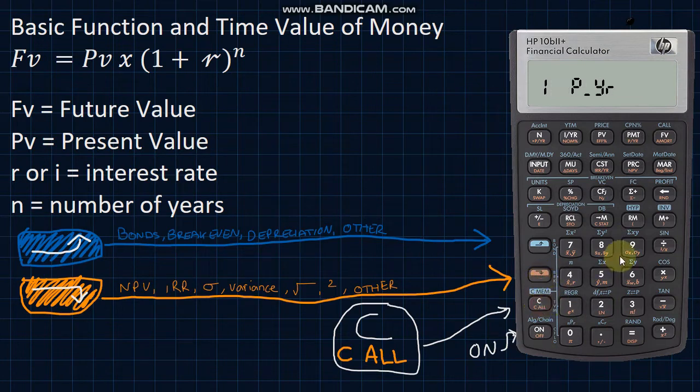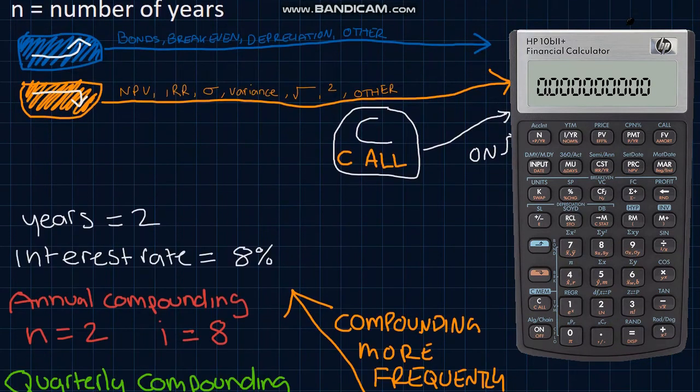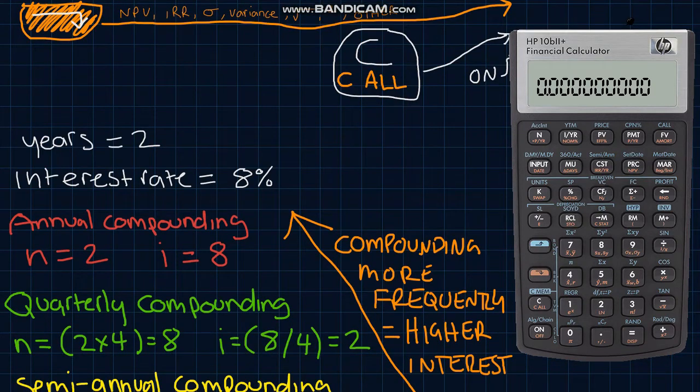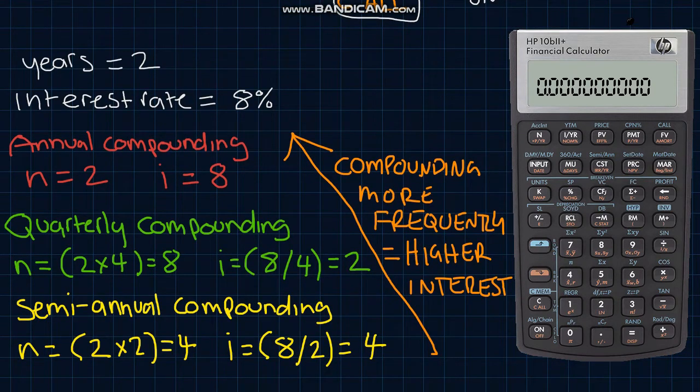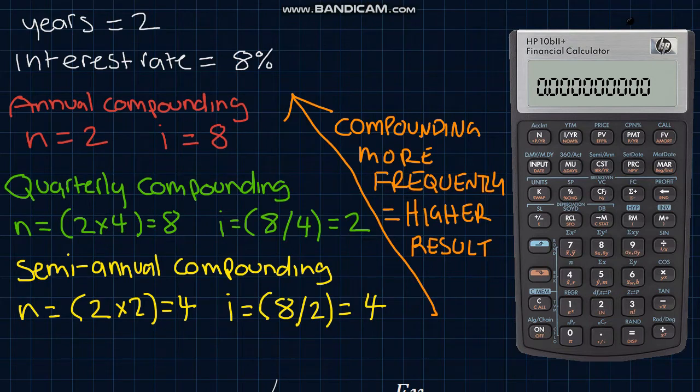And if you need to adjust your calculation to account for more frequent compounding periods per year, you simply multiply the number of years by the number of periods and divide the interest rate by the same number. For instance, when compounding quarterly, simply multiply the number of periods by 4 and divide the annual interest rate by 4 and use these figures in your calculation.